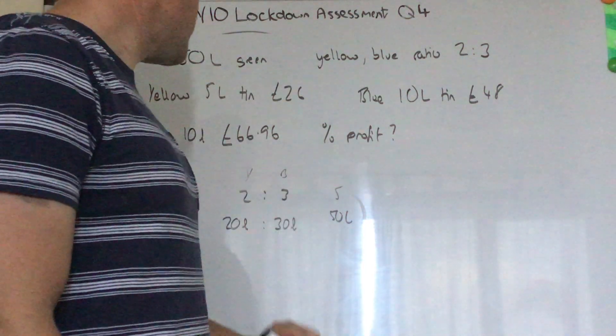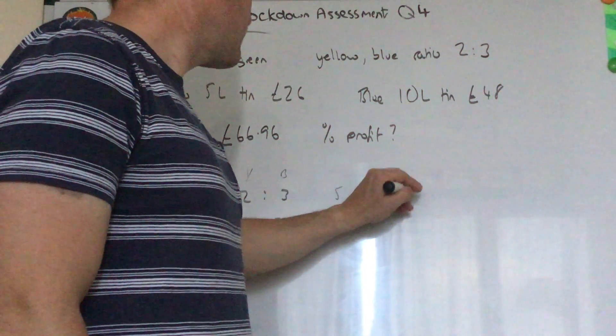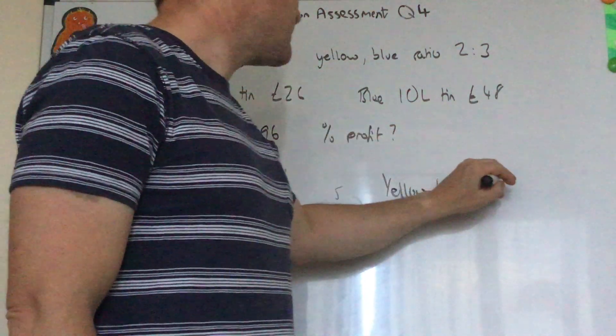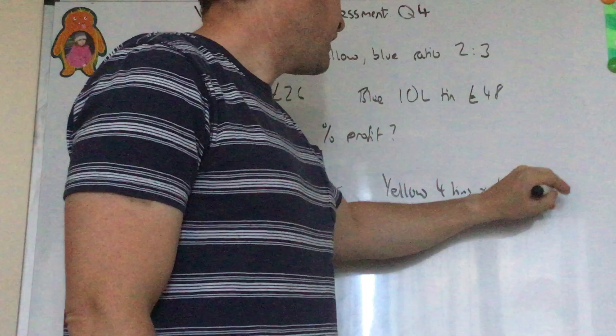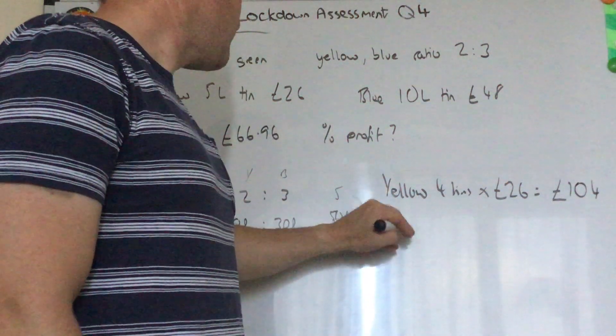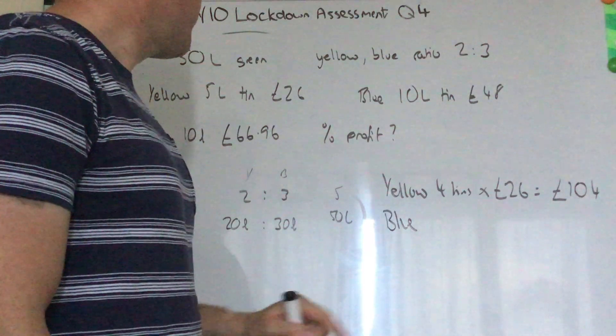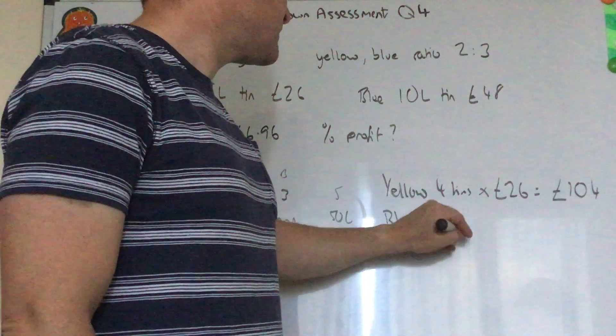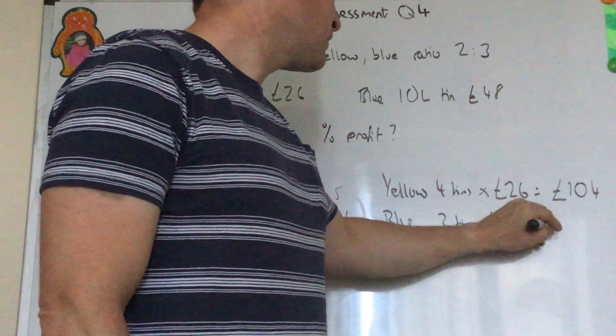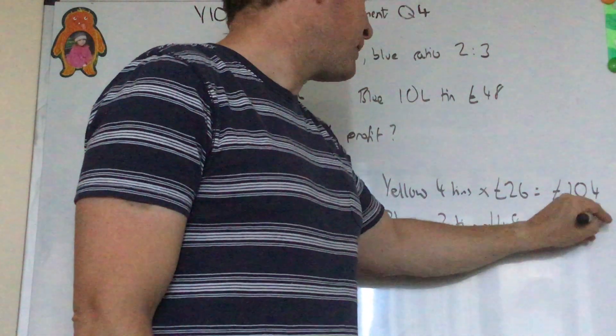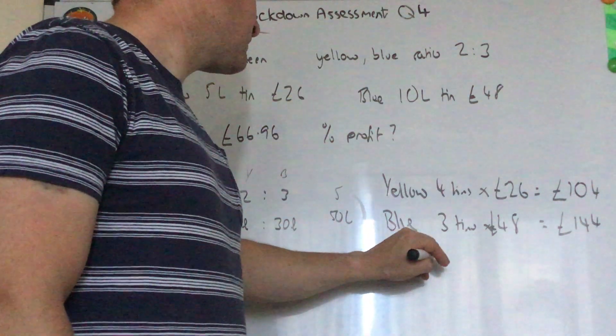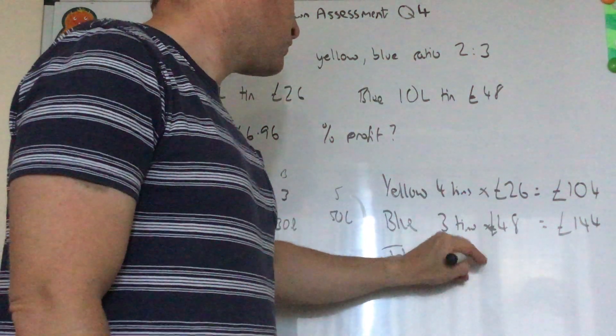20 litres of yellow will be four tins times £26, which is £104. For blue, we want 30 litres, so we need three tins times £48, which is £144. So he totally spends on paint £248.